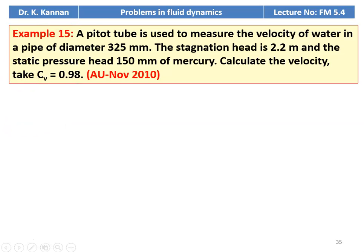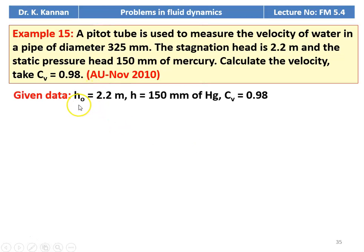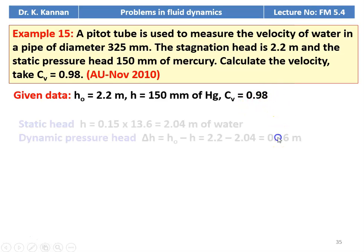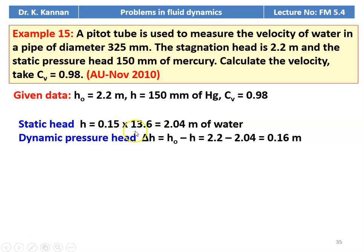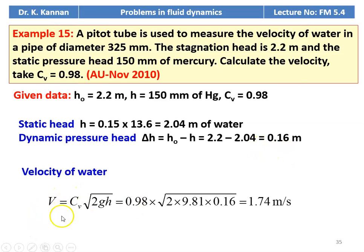Example number 15 from the November 2010 question paper: a Pitot tube is used to measure the velocity of water in a pipe of diameter 325 millimeters. The stagnation head is 2.2 meters and the static pressure head is 150 millimeters of mercury. Cv equals 0.98. Static head = 0.15 × 13.6 = 2.04 meters of water. Dynamic pressure head ΔH = 2.2 − 2.04 = 0.16 meters. Velocity V = Cv × √(2GH) = 0.98 × √(2 × 9.81 × 0.16) = 1.74 meters per second.